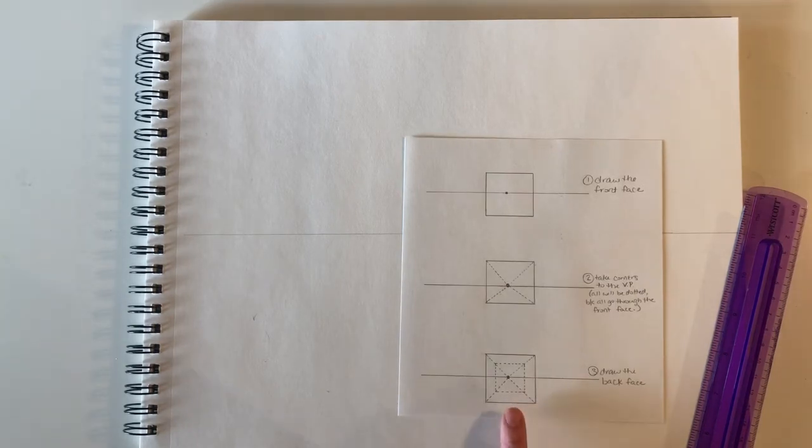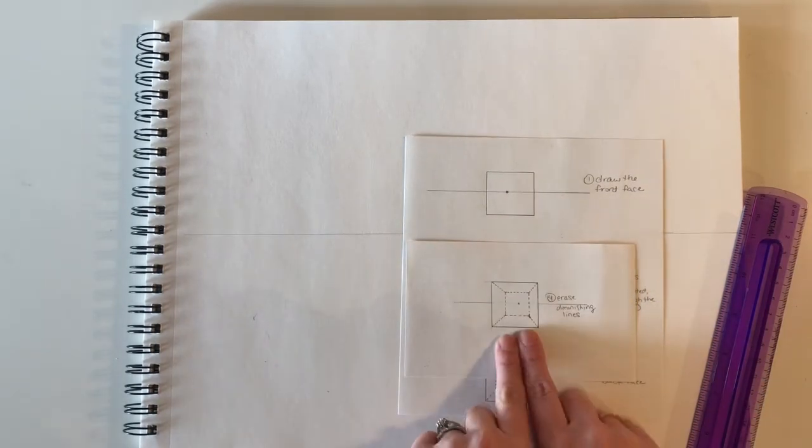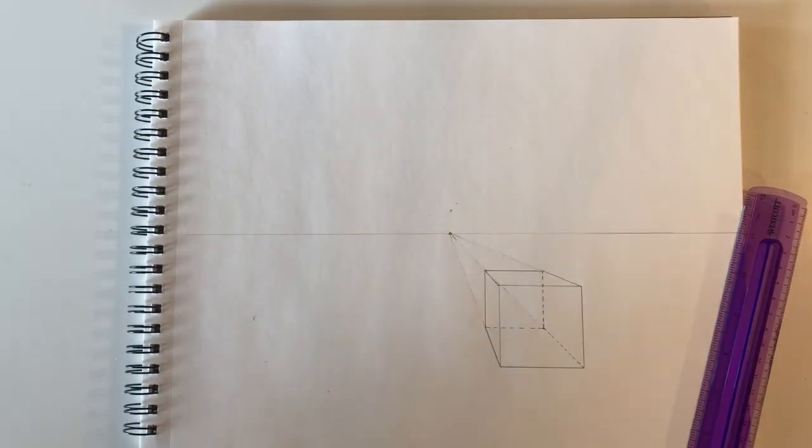Once it's complete and I've erased everything, it'll end up looking something like this. That's a good quick review for boxes in one-point perspective.